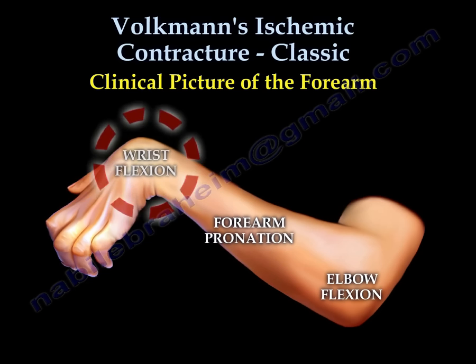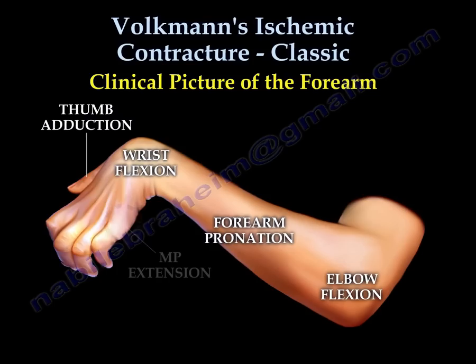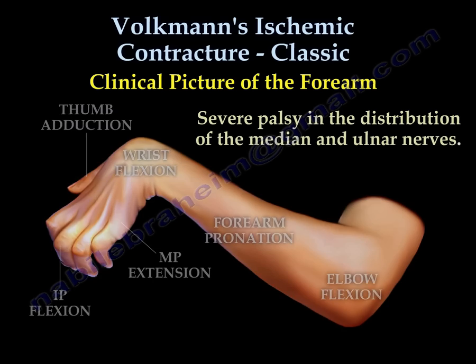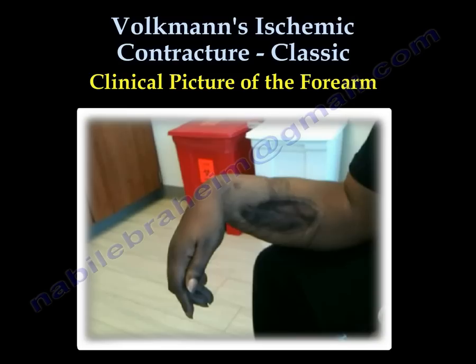The clinical picture of the forearm shows the elbow in flexion, the forearm in pronation, the wrist in flexion, and the thumb abducted. The MP joints are in extension and the IP joints are in flexion. There will also be severe palsy of the median and ulnar nerves. This is a classic patient example of Volkman's ischemic contracture of the forearm.